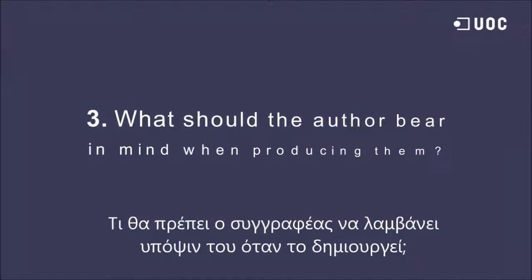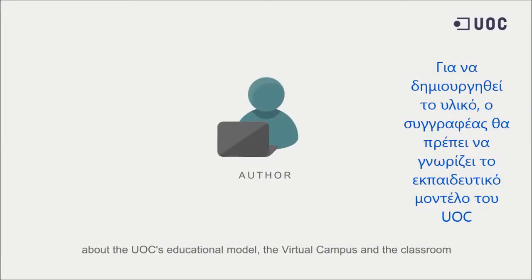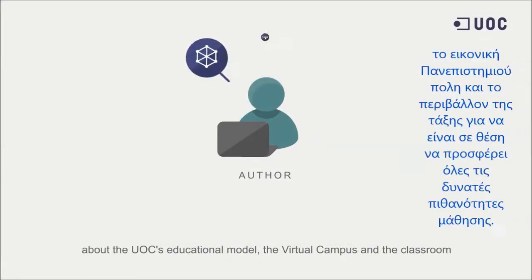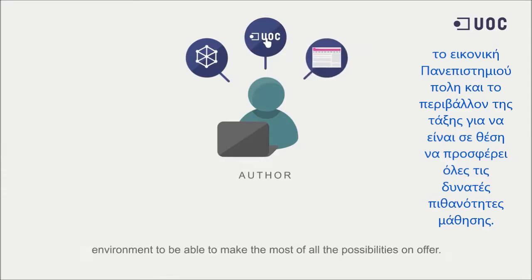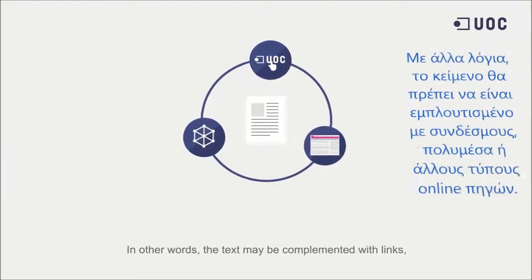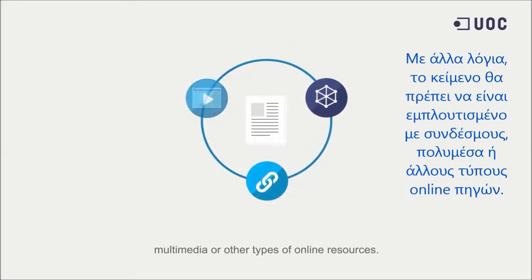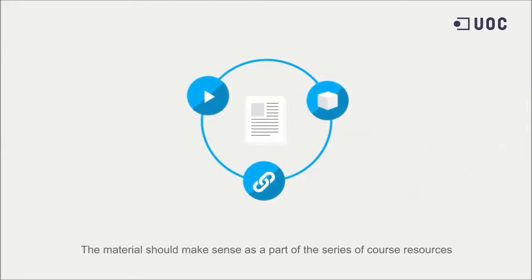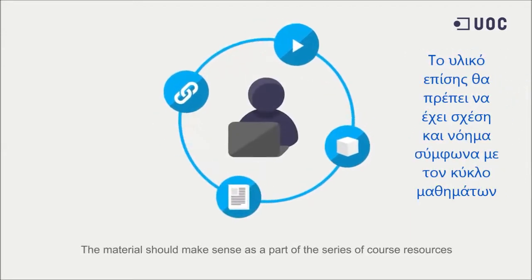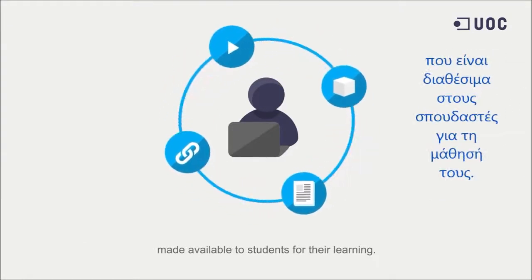What should the author bear in mind when producing them? To produce the material, the author must know about the UOC's educational model, the virtual campus and the classroom environment, to be able to make the most of all the possibilities on offer. The text may be complemented with links, multimedia or other types of online resources. The material should make sense as a part of the series of course resources made available to students for their learning.